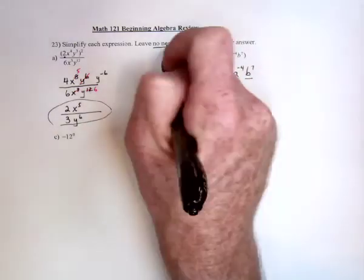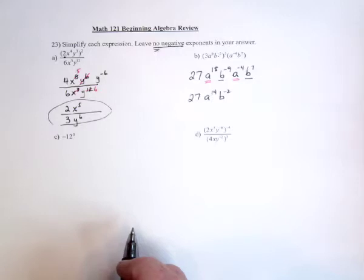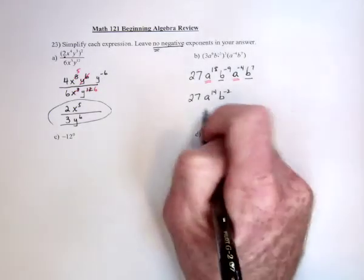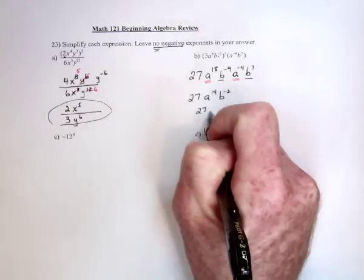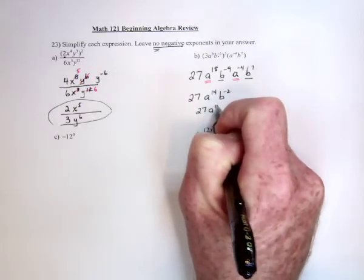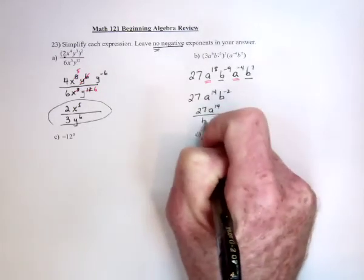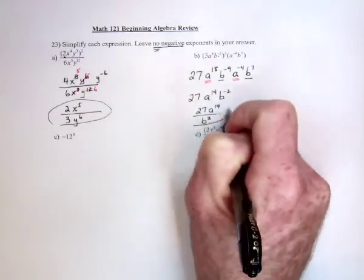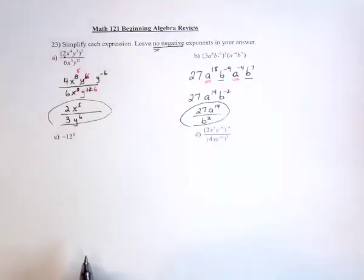But then, don't forget, leave no negative exponents. So, that's where we need to invert this. So, the 27 is fine. The a to the 14 is fine. But the b to the 2 needs to be moved to the denominator, and that gets rid of negative exponents.